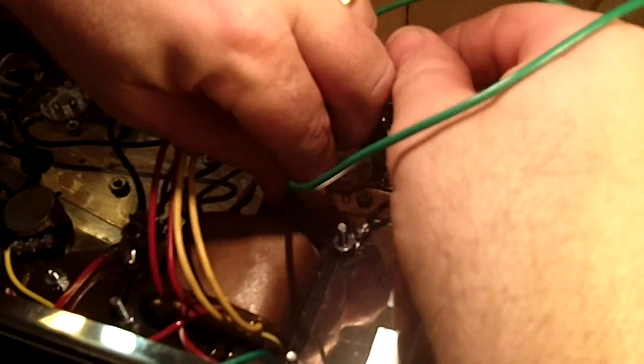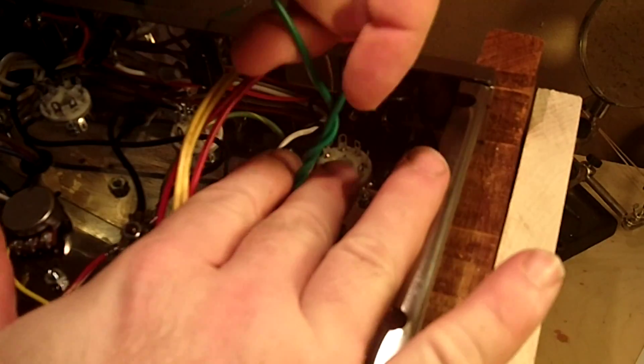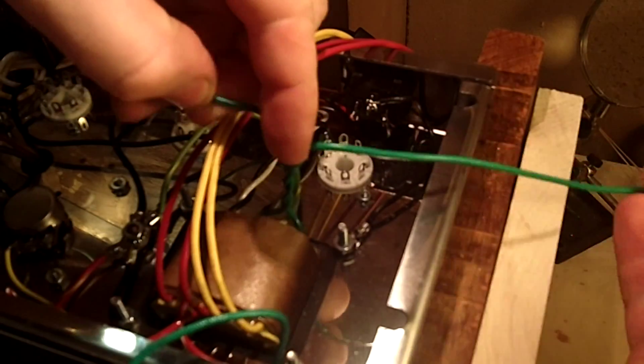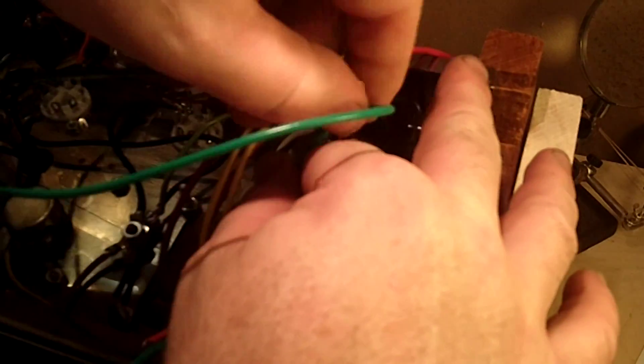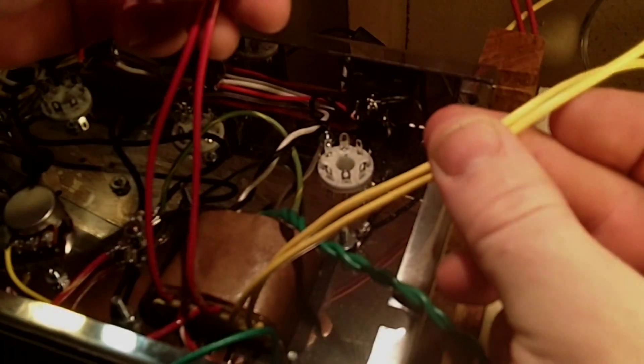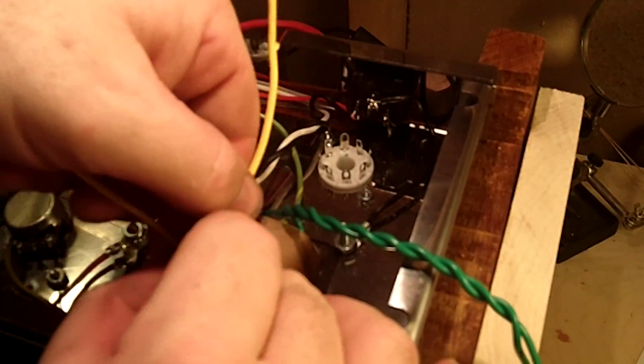Now remember these low voltage secondaries need to be twisted. And these secondaries coming off the transformer, they need to be twisted as well.